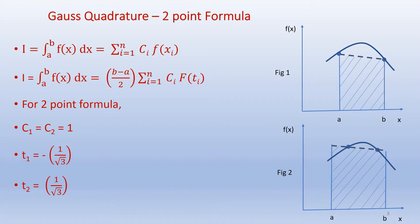We can see there is some error associated between the area under the curve and the area under the straight line. To eliminate this error, the procedure for Gauss Quadrature is as follows.